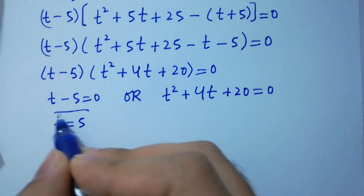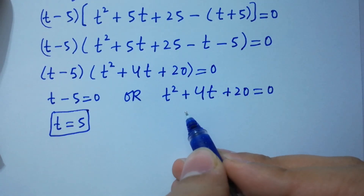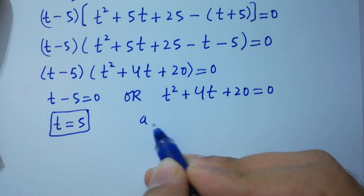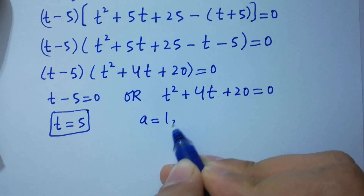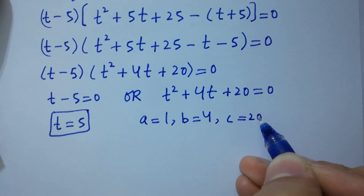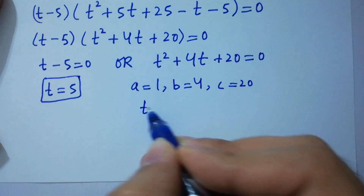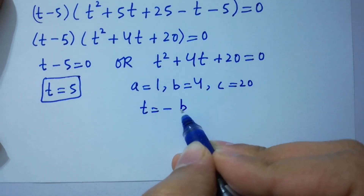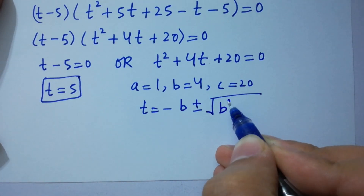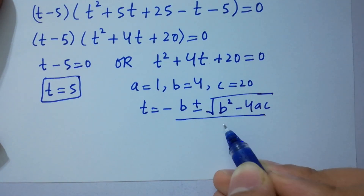Either t minus 5 equals 0, giving t equals 5, which is our first real solution. The second factor t squared plus 4t plus 20 equals 0 is a quadratic equation where a equals 1, b equals 4, and c equals 20. We apply the quadratic formula: t equals minus b plus or minus square root of b squared minus 4ac, all over 2a.